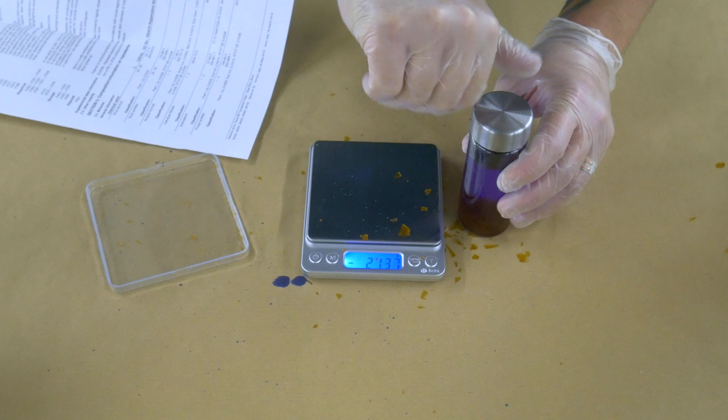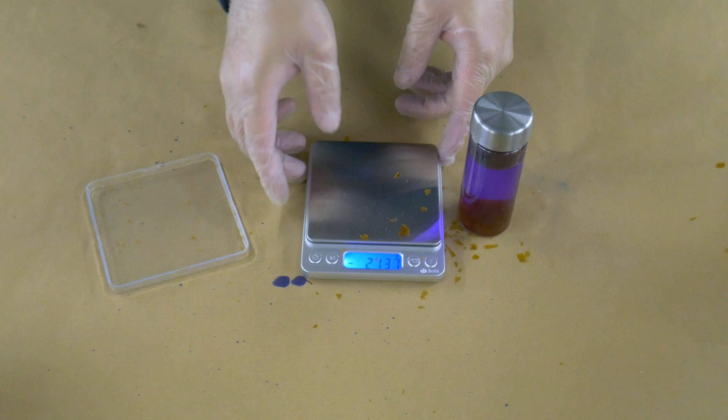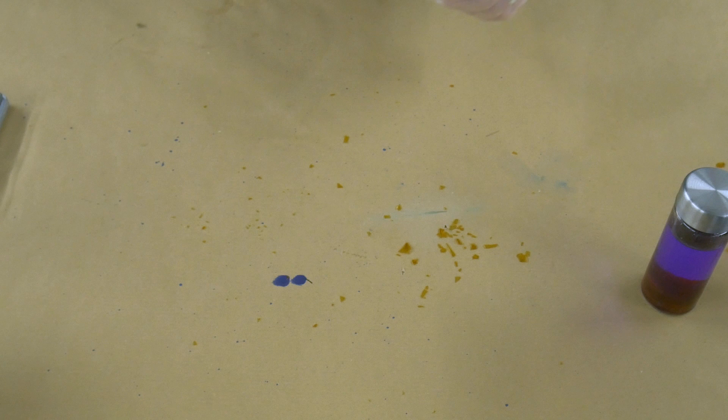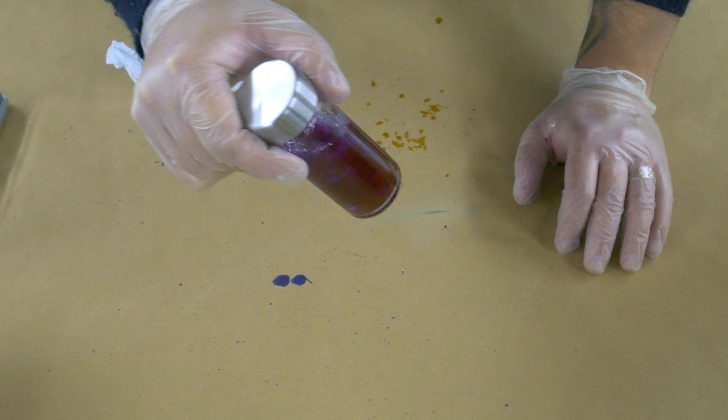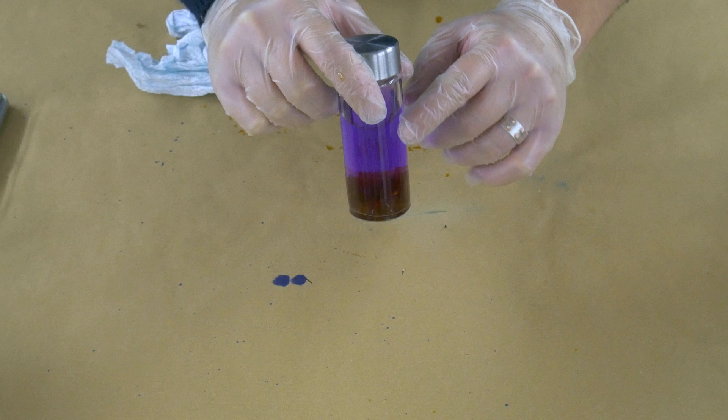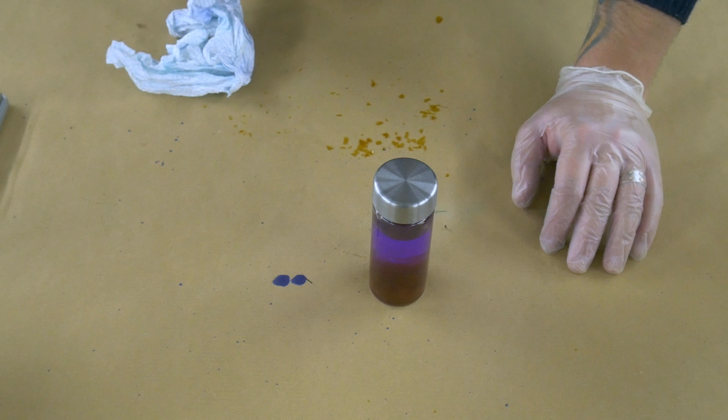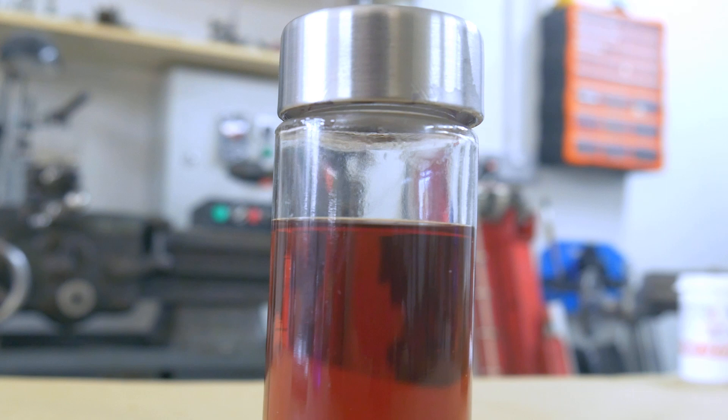And now all we need to do is, well, almost all we need to do is wait. The thing to do is to come along every so often and shake this bottle. So you want to agitate this. Because as you can see, the shellac flakes will just sink to the bottom. And really you want the solvent getting all the way around those. So the thing to do is come along every so often, shake the bottle, leave it alone for 10 minutes, come back, shake it until they're all dissolved.